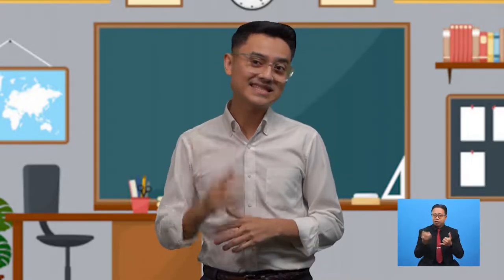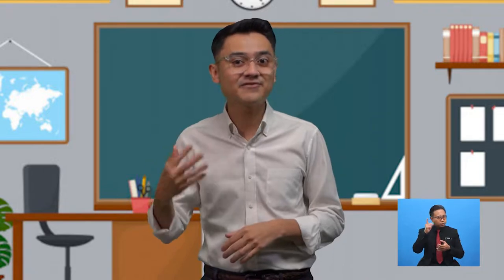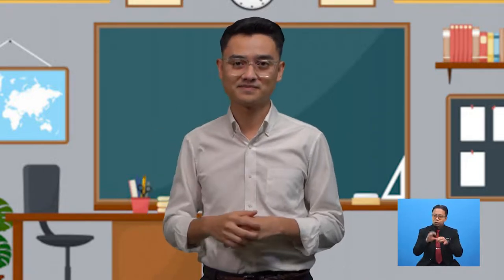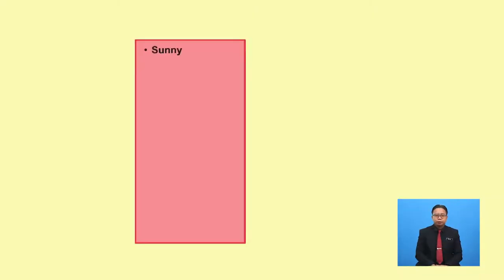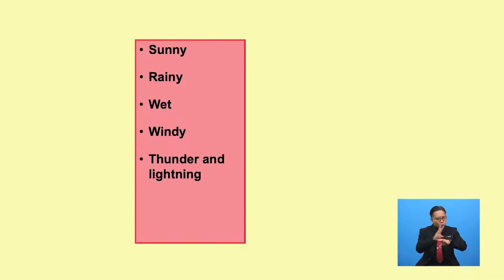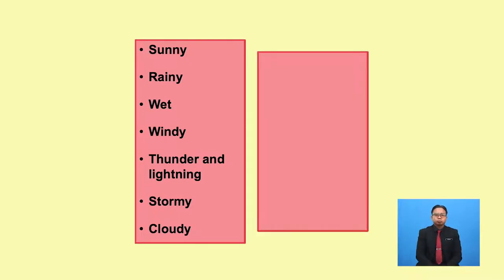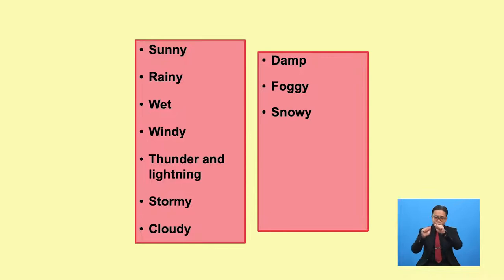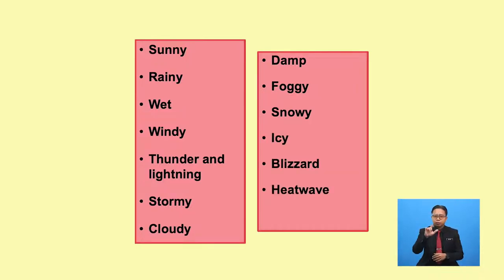Now, let's listen and repeat the different kinds of weather: Sunny. Rainy. Wet. Windy. Thunder and lightning. Stormy. Cloudy. Damp. Foggy. Snowy. Icy. Blizzard. Heat wave. Hailstones.